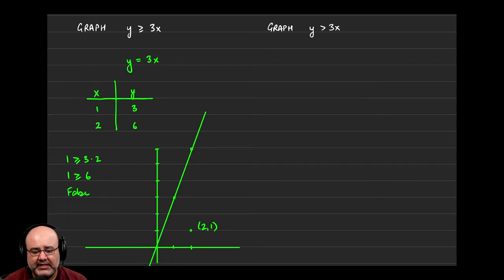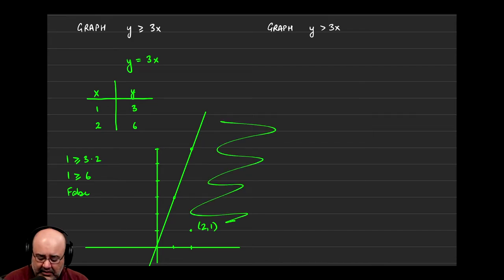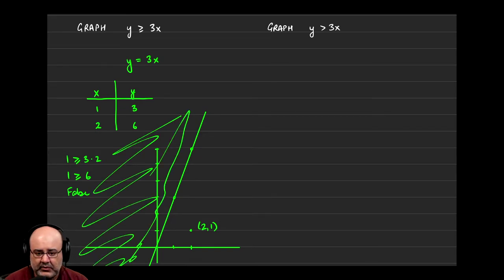The nice thing about this testing aspect is you only have to test one point. If that had been a true statement, you would shade on the side of the point. If it's a false statement, then you run away from it, so then you just shade the other side. So then this side, or this region, actually has all the solutions.